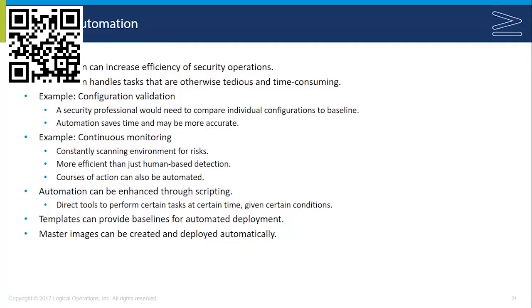You can also automate the course of action taken once a threat is found. For instance, an IPS can be configured to automatically block traffic that is deemed suspicious. Automation may happen at a certain level through customization of a particular tool; however, you can also enhance automation through scripting, which provides the steps to be taken in an automatic fashion. Templates can also provide baselines for automated deployment, and master images can be created and deployed automatically, which is commonly done when dealing with virtual machines.